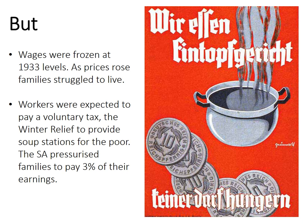In addition to that, workers were expected to pay a so-called voluntary tax called the Winter Relief Fund. The Winter Relief Fund was designed to provide soup stations for the poor, and you can see a poster advertising it on the right-hand side. The SA pressurised — in practice forced — families to pay 3% of their earnings into this fund. So yes, unemployment did significantly reduce, but real wages actually went down because prices continued to rise, and the amount of money in your pocket went down further because you were forced to pay into the Winter Relief Fund.